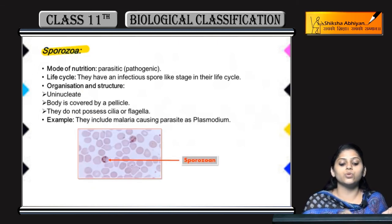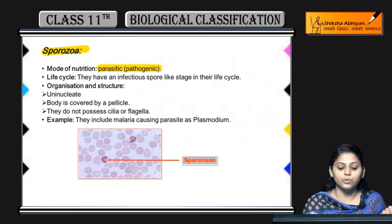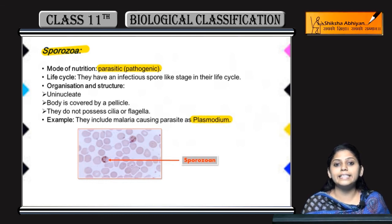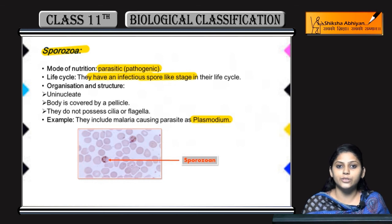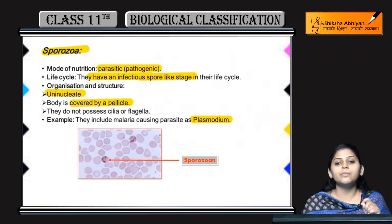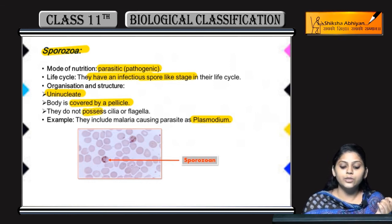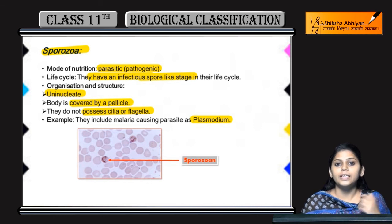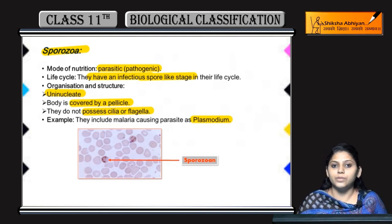The last one is Sporozoa. Unki mode of nutrition: they are parasitic and pathogenic also. Iska main example hai Plasmodium, that is known to cause malaria in human beings. Inka naam 'sporozoan' isliye padha, kyunki inki life cycle mein ek infectious spore-like stage hoti hai. Yhe uni-nucleate hote hai — ek hi nucleus inme present hota hai. Aur inki body is covered by pellicle, jaise euglenoids mein thi. They do not possess cilia aur flagella — yhe na cilia possess karte hain aur na hi flagella.